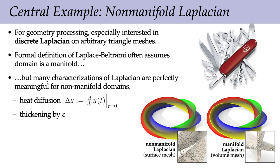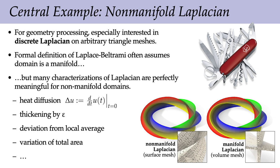Similarly, you could imagine taking a non-manifold object and thickening it by a ball of radius epsilon. This non-manifold surface becomes a manifold volume where we have a Laplacian defined in a classical sense. It makes perfectly good sense to solve problems with this volumetric Laplacian and then consider what happens as this thickening gets smaller and smaller. The Laplacian I'll define today behaves this way — if you compare results from these two different kinds of solves, you get very similar results. The Laplacian can also be thought of as describing a deviation from a local average, or connected to the variation of total surface area. In general, the concept of the Laplacian is perfectly meaningful for non-manifold data.